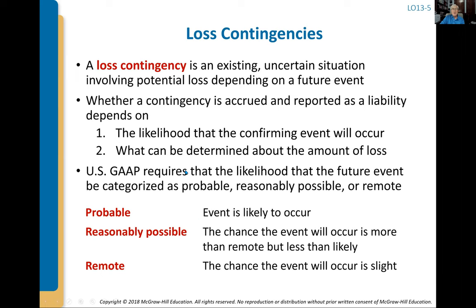Here are the rules. You've got to determine two things: what's the likelihood, what's the probability that we're going to have that recall or bad thing? And can we even calculate how much this would be? Is it probable — likely to occur? Is it reasonably possible — the chance will occur is more than remote but less than likely? They don't have percentages on these in the rules, though some accounting firms think it's around 75% equals probable. Or is it remote — a very remote chance that we're going to have a cash outflow? That's the likelihood assessment.